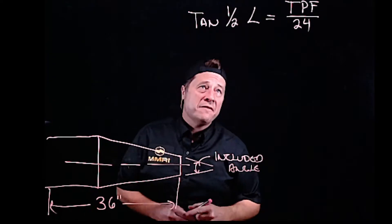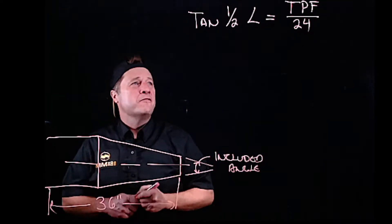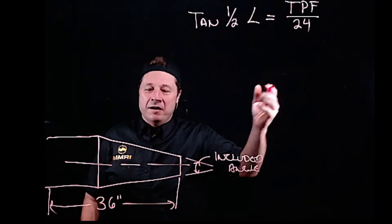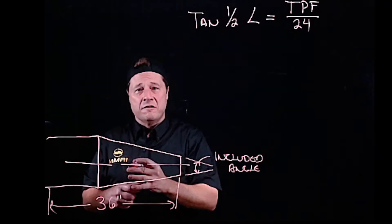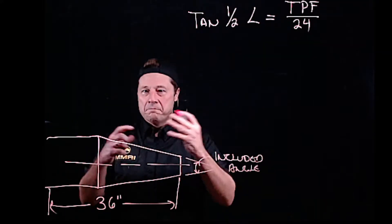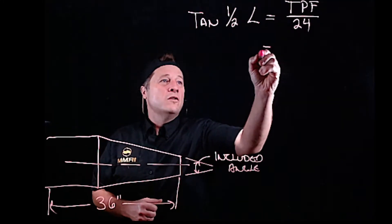Tangent of half the angle is equal to the taper per foot divided by 24. What's the taper per foot? Well, it's either given to you, or you have to solve it. Big D minus little d divided by length of taper times 12. You got your taper per foot.